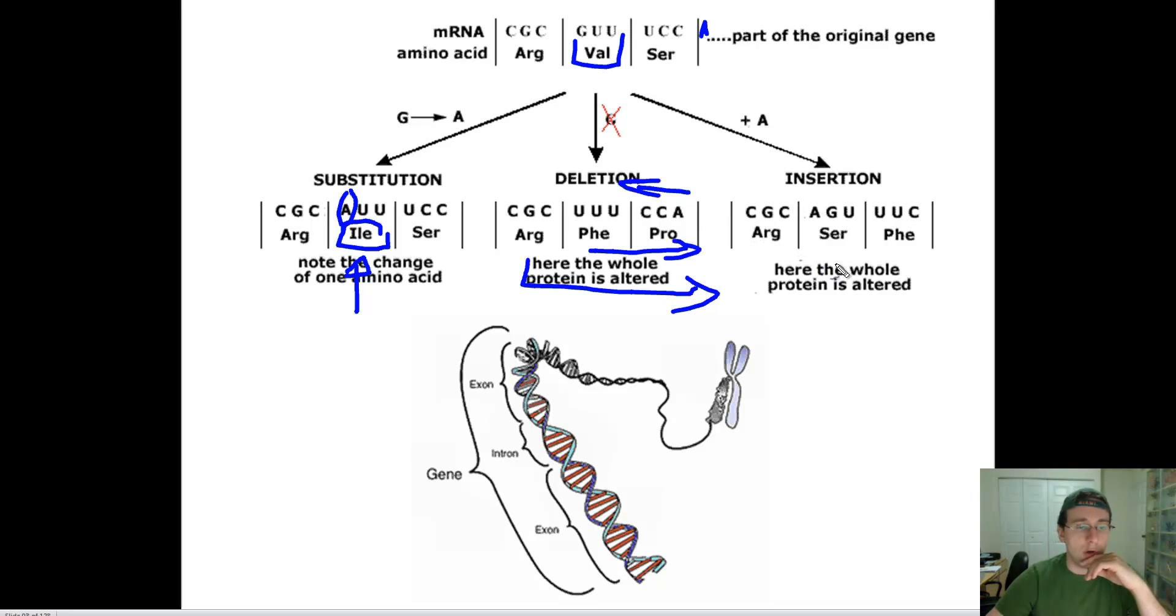The whole protein will be changed if there's an insertion event. This time I added an A ahead of the G, and again the entire protein code was shifted to the right, which changed every single amino acid sequence from here on. Let's look at each one of them in more detail.